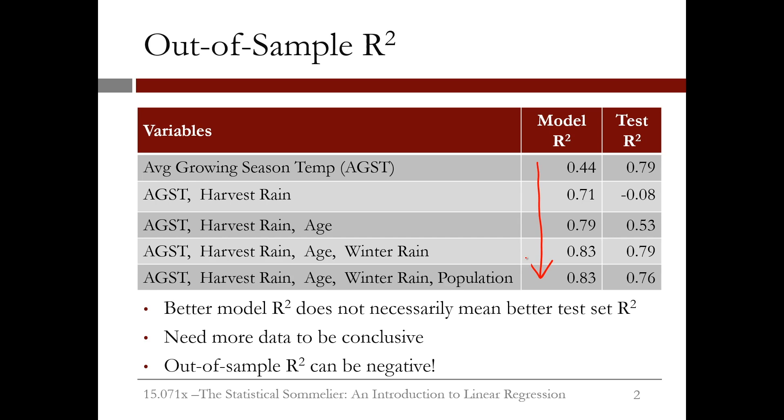We want to look for a model with a good R² but also with a good test set R². In this case, we would need more data to be conclusive since two data points in the test set are not really enough to reach any conclusions. However, it looks like our model that uses average growing season temperature, harvest rain, age, and winter rain does very well in-sample on the training set as well as out-of-sample on the test set.